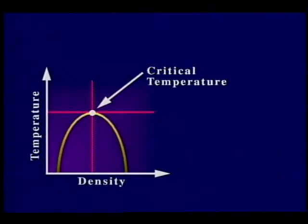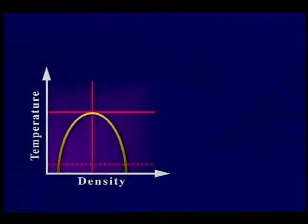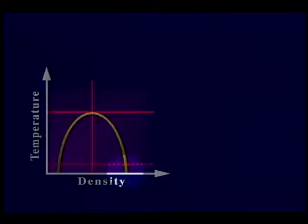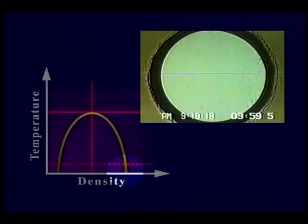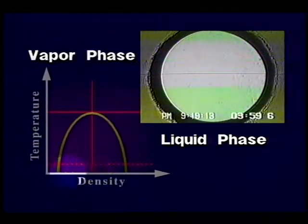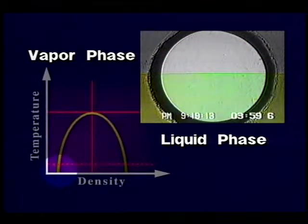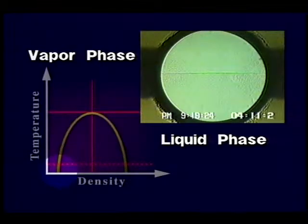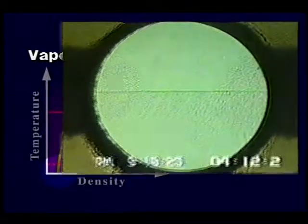The critical temperature of a fluid is the highest temperature at which its liquid and vapor phases can coexist. At low temperatures, both the liquid and its vapor can be observed and exhibit, on Earth, a visible meniscus or boundary. At temperatures above the critical temperature, only a single phase exists.